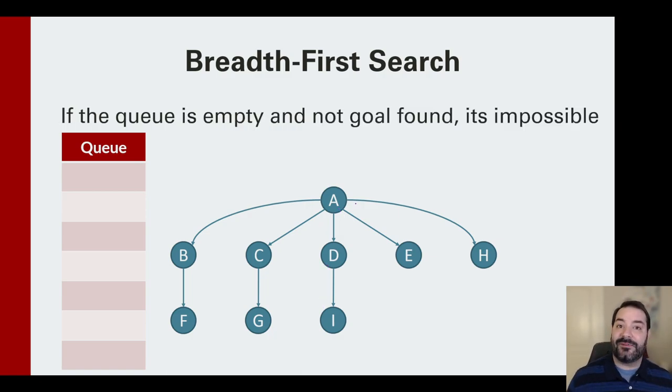But what happens if I don't have a goal? What happens if no goal was found? What breadth-first is going to be able to tell us, what breadth-first is able to say is, if we've traversed everything, we've traversed all possible pathways, and we were not able to reach a goal condition, then, in sort of the sad fashion, that goal is impossible to reach.